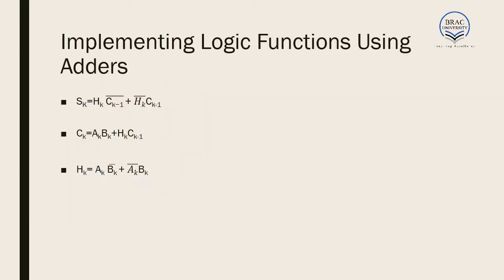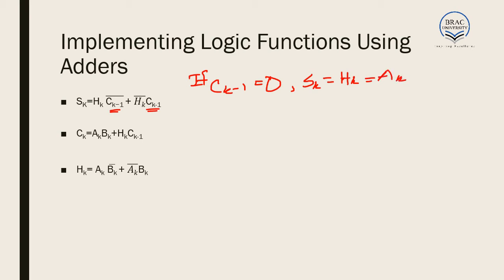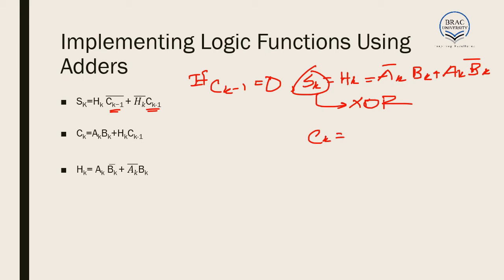Now we have learned how to make an adder. Next, we learn how we can implement logic functions using adders. The inputs are A·K, B·K, and C·K-1. If we put C·K-1=0, then S·K = H·K, where H·K = Ā·K·B·K + A·K·B̅·K. So from the sum output, we get the XOR function. And from the carry output, with C·K-1=0, we get A·K·B·K — that is, the AND operation.